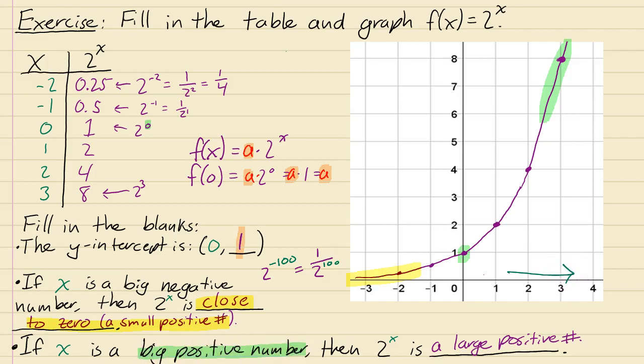When you go out in this direction, then two to the x, these results that we get here, numbers like four and eight, those are just going to get really, really big. So that's what's happening with this part of the graph. So that's the basic idea of exponential functions and what their graphs look like.